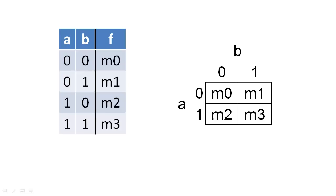For example, the top left corner of the K-map corresponds to minterm 0, which relates to the inputs of a equal to 0 and b equal to 0.